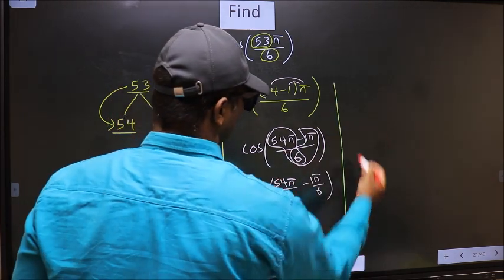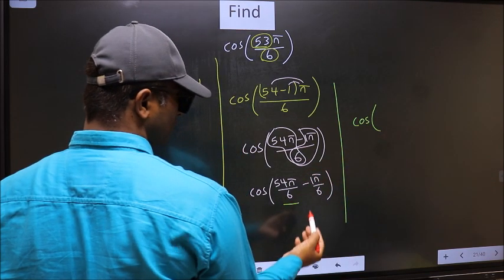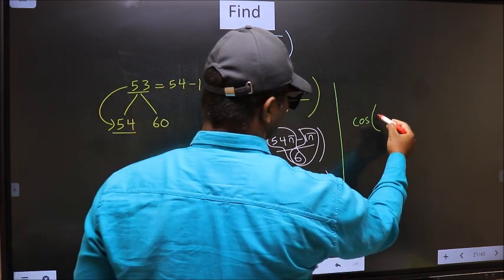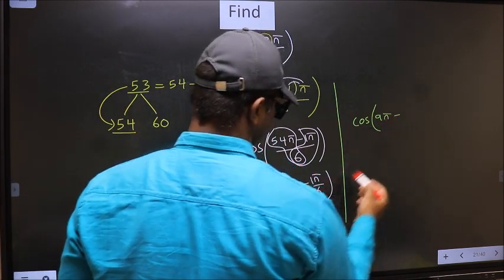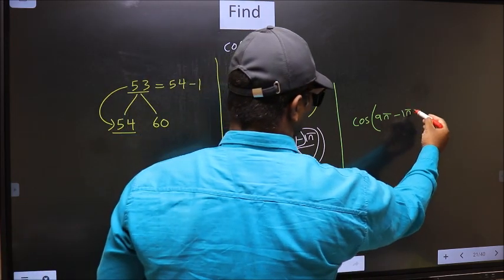Next, here you should cancel. 6 into 54 gives 9. So we get 9π minus π/6.